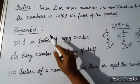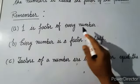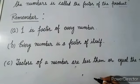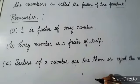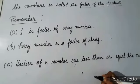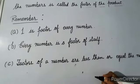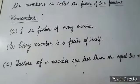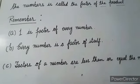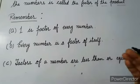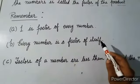Now some important facts to remember. One is a factor of every number — one sabhi ka factor hota hai. All numbers have one as their factor. Why? Because in the table of one, all numbers are coming: one times one is one, one times two is two, one times three is three, and so on.